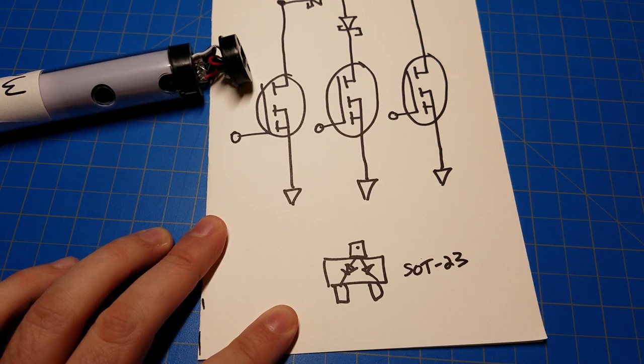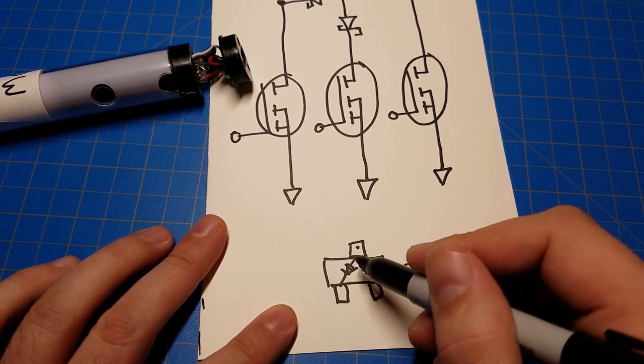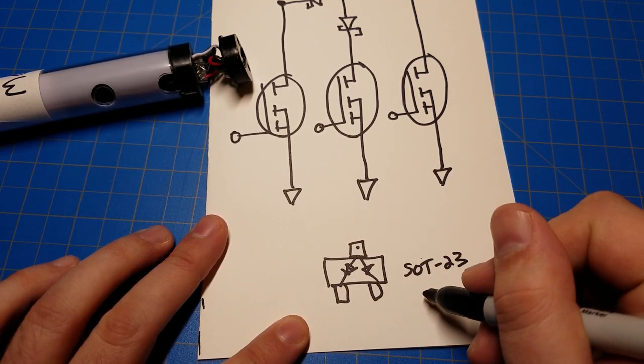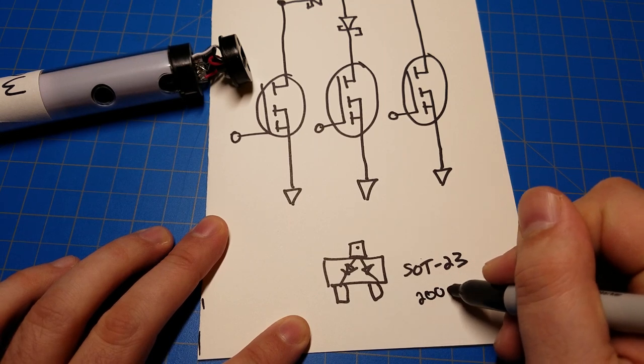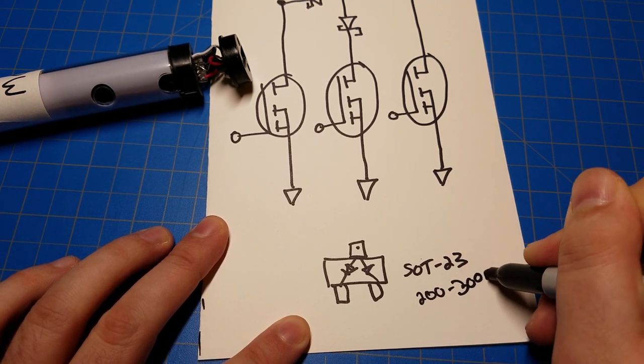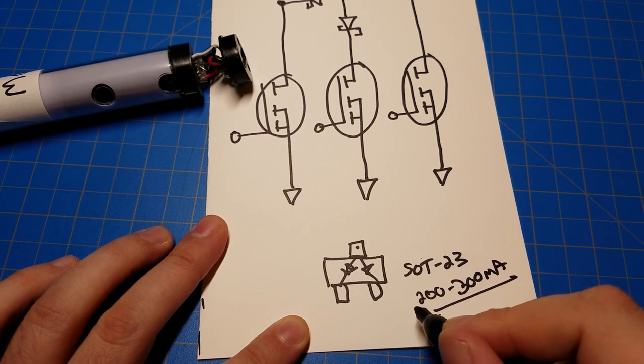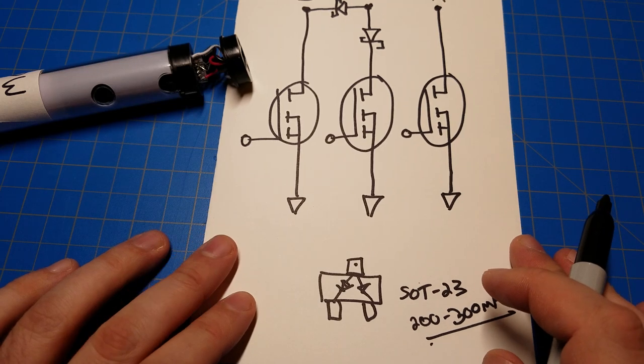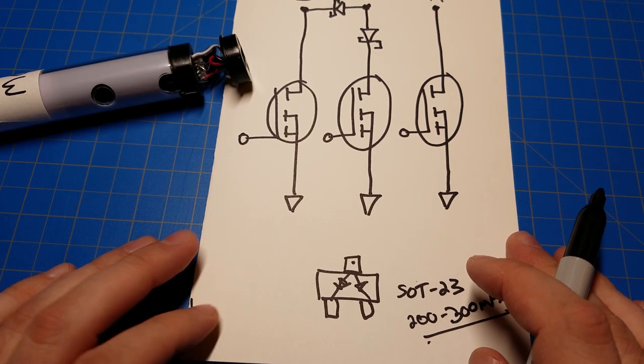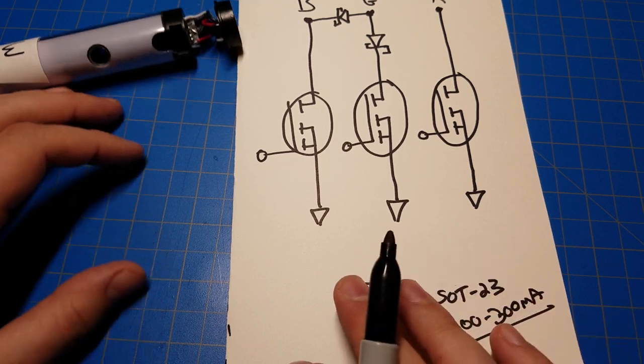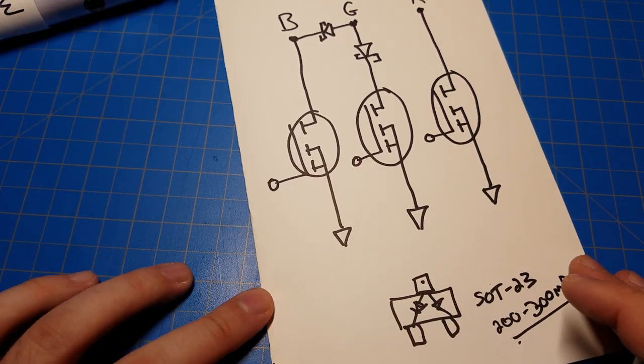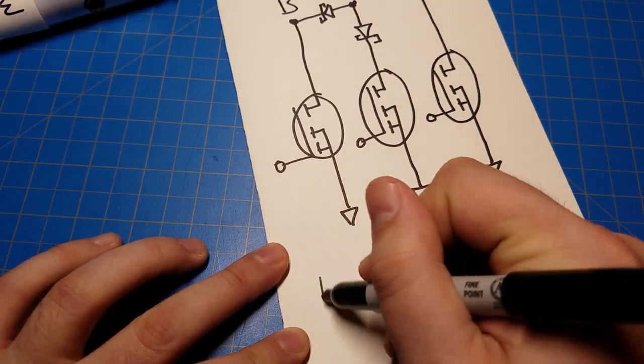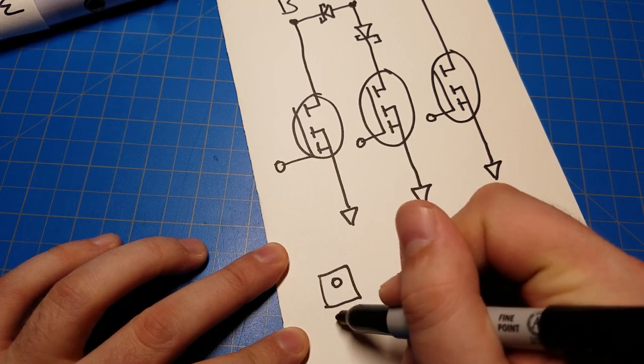The problem with these packages is the forward voltage, even for Schottky diodes, in this package is going to be relatively high. Like 500, 600 millivolts. I'm not sure if it's worth it here. Also, these packages tend to be rated between like around 200 to 300 milliamps. That's, that is barely enough. And you could probably get away with it. I'm not sure that I would.